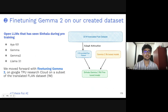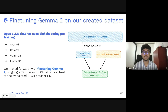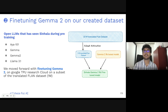We explored several open LLMs that had exposure to Sinhala during the pre-training process. After evaluating mT0, Gemma, Gemma 2, and Llama 3.1, we chose Gemma 2 9B for fine-tuning. Based on guidance we received from Marzia, we fine-tuned on a one-million subset of the translated FLAN dataset.